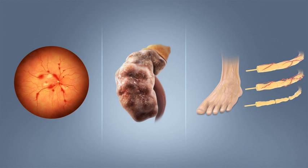Untreated GDM can damage the health of the fetus or mother. Risks to the baby include macrosomia (high birth weight), congenital heart and central nervous system abnormalities, and skeletal muscle malformations. Increased levels of insulin in a fetus's blood may inhibit fetal surfactant production and cause infant respiratory distress syndrome. A high blood bilirubin level may result from red blood cell destruction. In severe cases, perinatal death may occur, most commonly as a result of poor placental perfusion due to vascular impairment. Labor induction may be indicated with decreased placental function. A cesarean section may be performed if there is marked fetal distress or an increased risk of injury associated with macrosomia, such as shoulder dystocia.